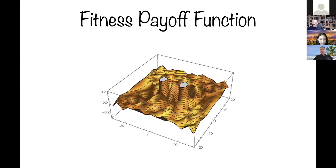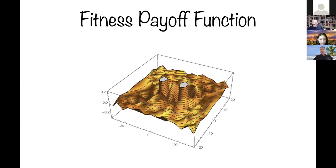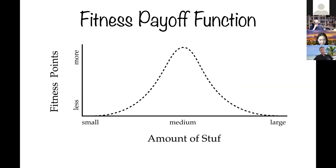To understand at a top level why this could be — because it seems ludicrous — how could our senses be useful if they don't report truths about physical reality? To give you an intuition, let's make a very simple fitness payoff. On the horizontal axis there's some resource in objective reality — call it 'stuff.' There could be a small, medium, or large amount of stuff — that's a total order. Suppose there's this total order structure in objective reality, and suppose fitness payoffs form something like a Gaussian curve.